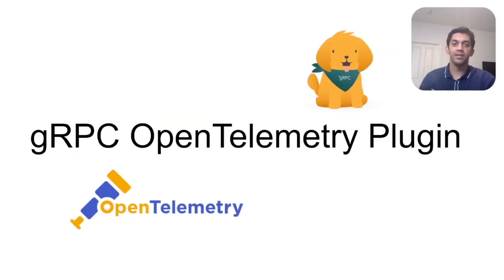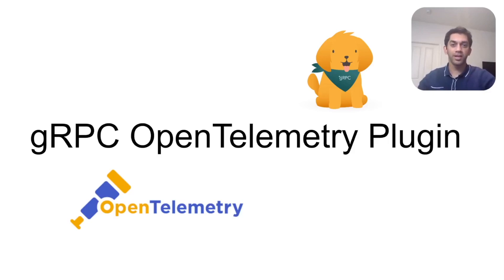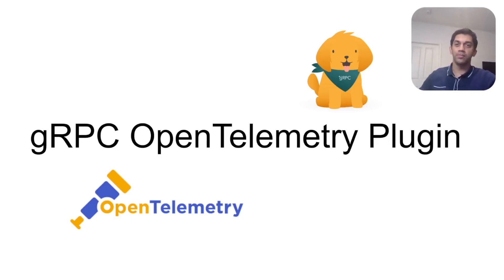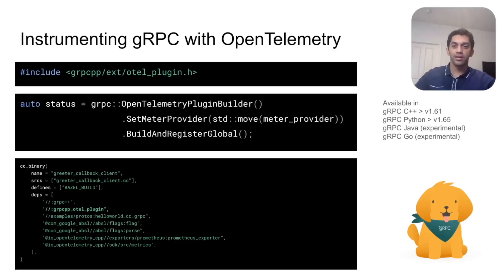Now that we understand the signals that OpenTelemetry can provide, let's take a look at how gRPC can be instrumented with OpenTelemetry. The gRPC OpenTelemetry plugin is currently available in C++, Java, Go, and Python. As of now, this plugin provides metrics, and tracing will soon be available.